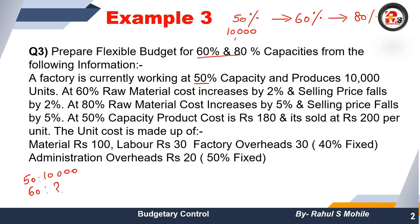At 60% capacity that will be 12,000 units, and at 80% capacity we will be preparing for 16,000 units. Now let's read some adjustments: at 60% capacity, raw material cost will increase by 2% and selling price falls by 2%. At 80% capacity, raw material cost increases by 5% and selling price falls by 5%.